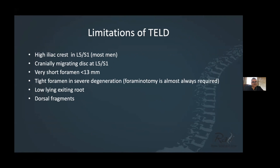Limitations: a high iliac crest, most commonly at L5-S1, may well be in your way, especially if the fragment is cranially migrating. A very short foramen creates issues with reaming and introduction of the cannula. If the foramen is collapsed due to severe disc degeneration, you need to do a foraminotomy, which is very feasible with the endoscopic transforaminal approach. A low-lying exiting nerve root is an issue, and dorsally embedded fragments may be difficult to access from the side. But in experienced hands, most of these can be done safely and effectively.